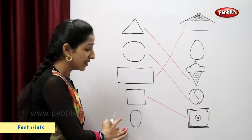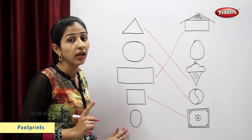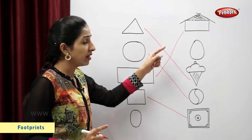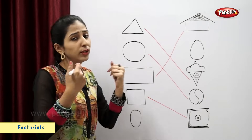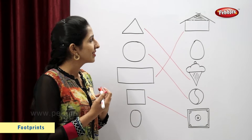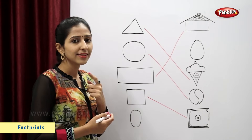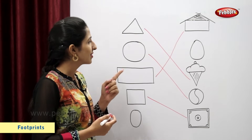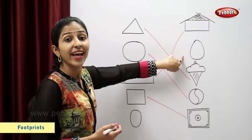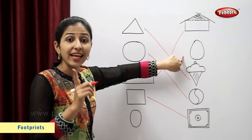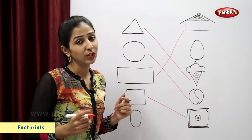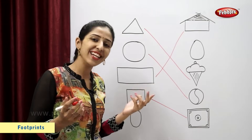This is oval. Now, you tell me, which is the figure similar to oval? Egg. Egg is similar to oval. So, now, let's match.